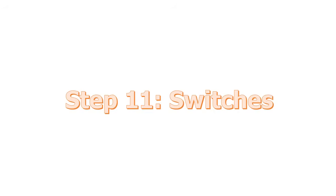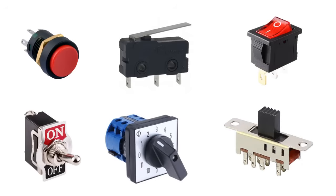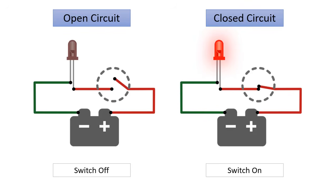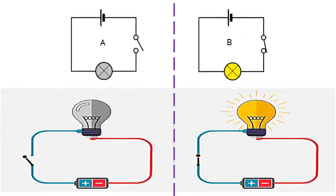Step 11. Switches. A switch is basically a mechanical device that creates a break in a circuit. When you activate the switch, it opens or closes the circuit. This is dependent on the type of switch it is. Normally open switches close the circuit when activated. Normally closed switches open the circuit when activated.